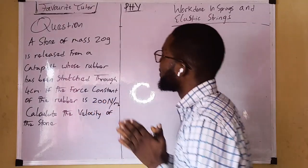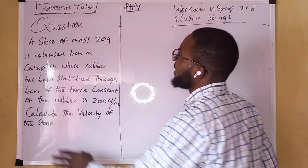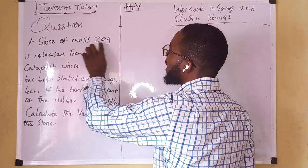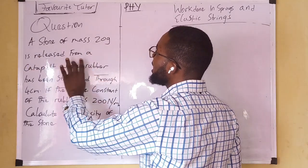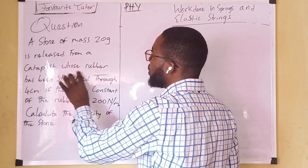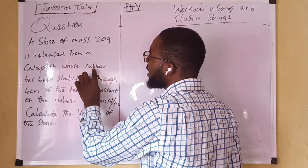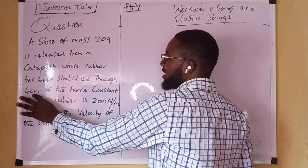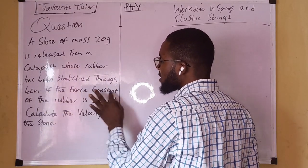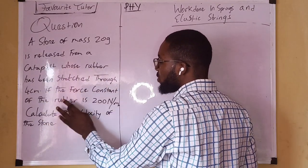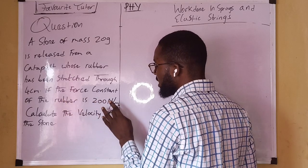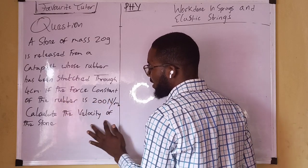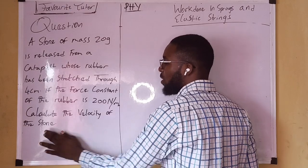Here is the question on the board: A stone of mass 20 grams is released from a catapult whose rubber has been stretched through four centimeters. If the force constant of the rubber is 100 newtons per meter, calculate the velocity of the stone.